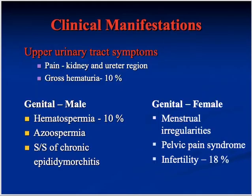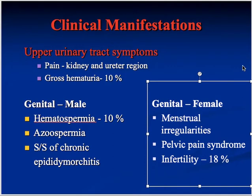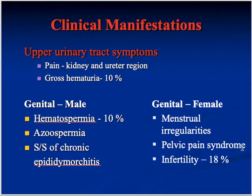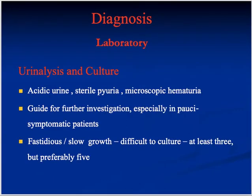Upper urinary tract symptoms include pain and gross hematuria. In males there may be hematospermia, azoospermia, or chronic epididymo-orchitis. In females there can be menstrual irregularities, pelvic pain syndrome, and infertility.